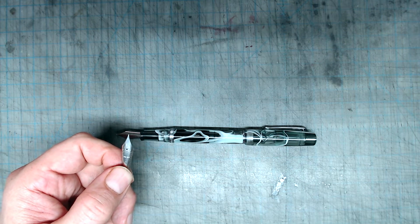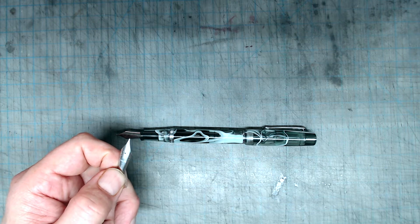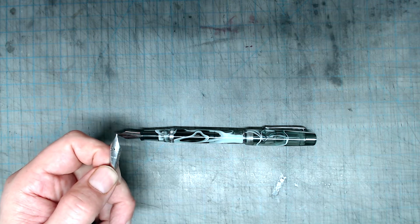These high-quality, well-functioning number 6 Jowo nibs come in tons of sizes, from extra fine all the way up to 1.5mm stub, and can be custom ground into a hundred different interesting variations.